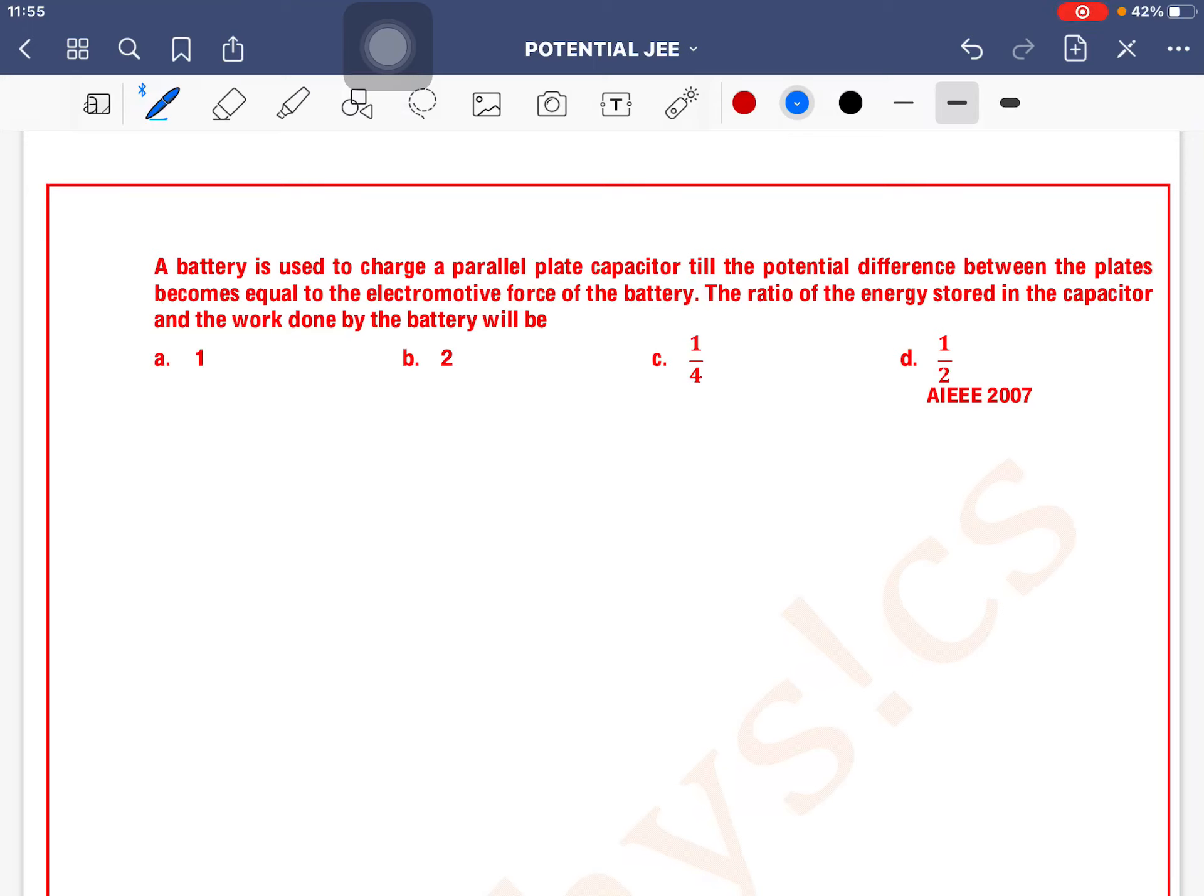Now this is a formula-based question. A battery is used to charge a parallel plate capacitor till the potential difference between the plates becomes equal to the electromotive force of the battery. The ratio of energy stored in the capacitor and the work done by the battery is? So you have a capacitor which is being charged by using an EMF battery.